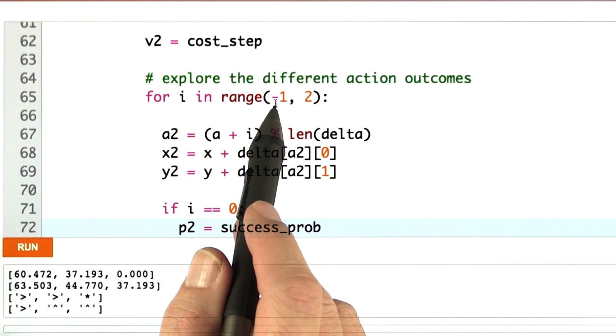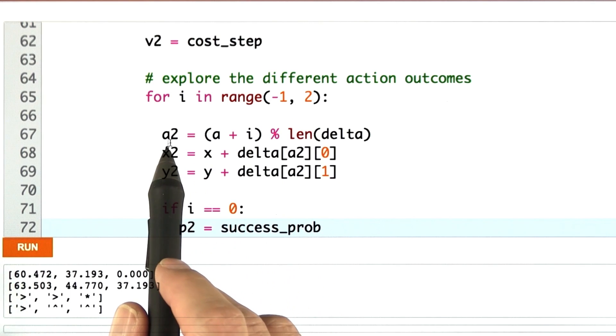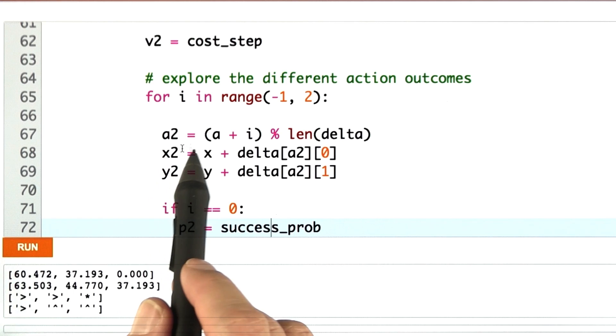I now create a new inner loop of going through different action outcomes. This list is minus 1, 0, and 1. And I set the actual outcome to the adjacent action in the action list.